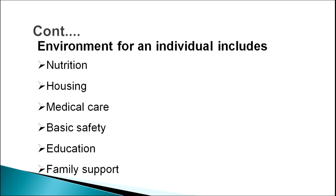Our environment includes what we eat — that is our nutritional status — where we live, what type of house and locale we are in, the medical care available, whether we have proper immunization and medicines when sick, basic safety, education, and family support. Children who grow in joint families interact with others in a better way than children who grow in nuclear families, as they have more interpersonal experience.